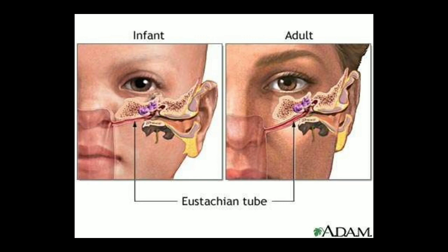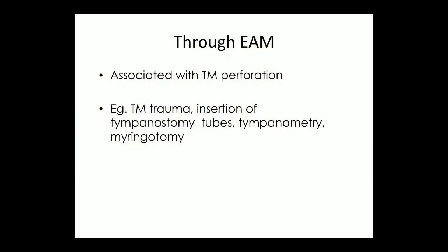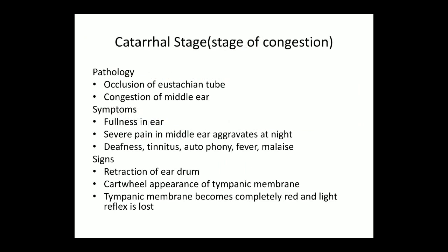In this diagram we can see the angle, which is 10 degrees in infants and 45 degrees in adults — that's why chances of ASOM increase in infants. Infection through the external acoustic canal is associated with tympanic membrane perforation, for example tympanic membrane trauma, insertion of tympanostomy tubes, tympanometry, or myringotomy, all of which can lead to ASOM.